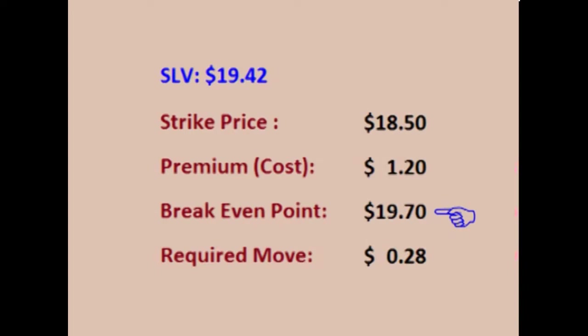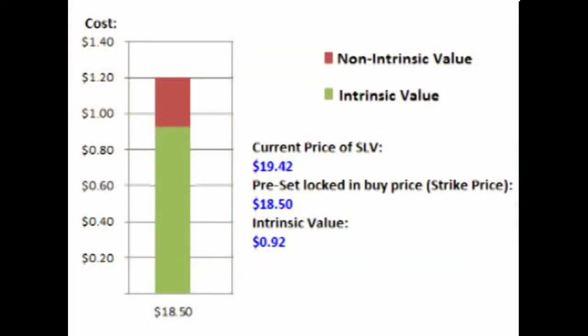SLV is currently at $19.42 a share, so for this trade to be profitable, SLV needs to climb more than $0.28 before the option expires. The $18.50 strike locks in a preset buy price $0.92 lower than the current price of $19.42, meaning this option is in the money — it has $0.92 worth of intrinsic value.